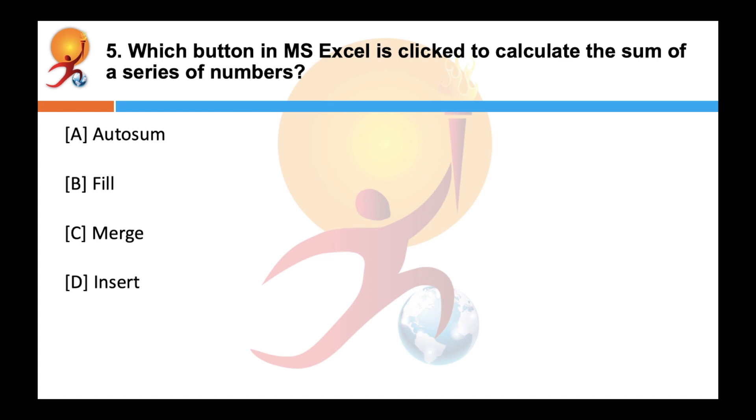Which button in MS Excel is clicked to calculate the sum of a series of numbers? Correct answer is A. When AUTO SUM option is clicked in MS Excel, it automatically enters a formula that uses the SUM function to sum the given numbers.